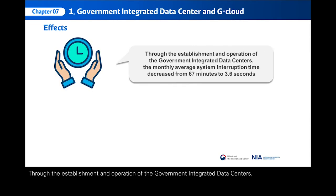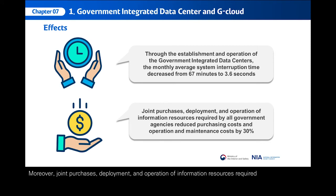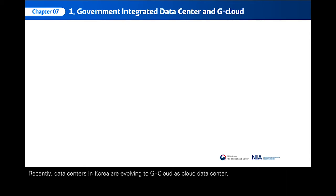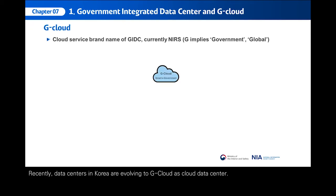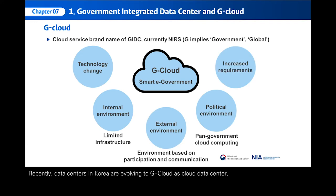Through the establishment and operation of the Government Integrated Data Centers, the monthly average system interruption time decreased from 67 minutes to 3.6 seconds. Moreover, joint purchases, deployment, and operation of information resources required by all government agencies reduced purchasing costs and operation and maintenance costs by 30%. Recently, data centers in Korea are evolving to G-Cloud as a Cloud Data Center.